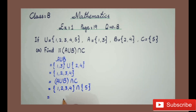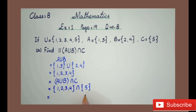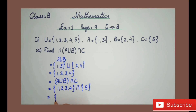In intersection we select only common elements. Because there is no common element in these sets, therefore our answer will be just the empty set.